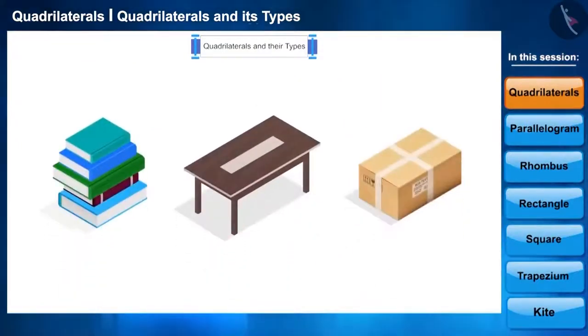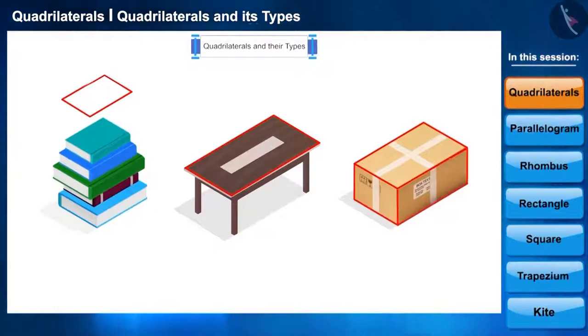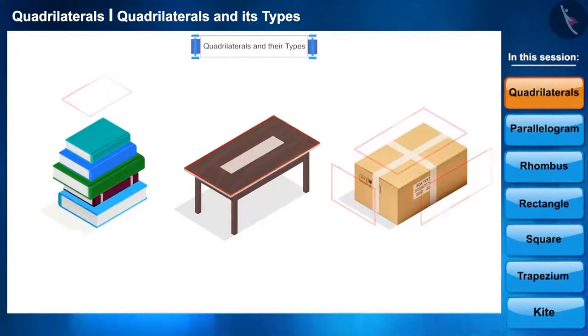We see many things around us in which we can see the shapes of quadrilaterals. For example, this part of the book, we can see its boundaries which is the shape of the quadrilateral. Similarly, the boundary of each surface of this box.